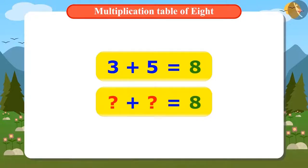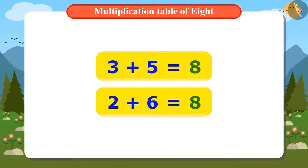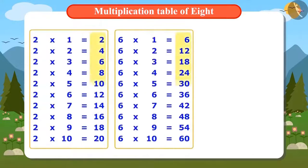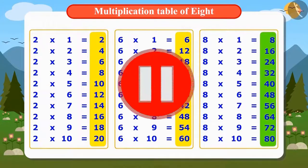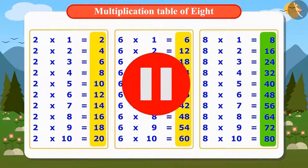For example, adding 3 and 5 gives the answer 8. We can also do this by adding 2 and 6, which also gives us 8. This means you can find the table of 8 by adding the corresponding numbers of the multiplication tables of 2 and 6. Pause the video and write down the full table of 8.